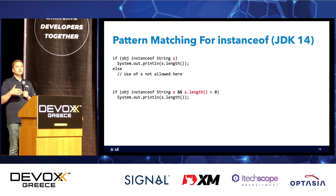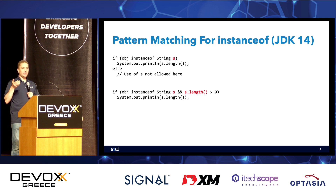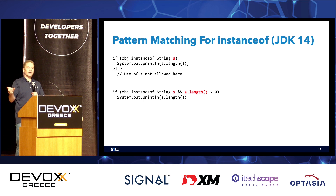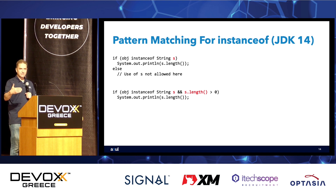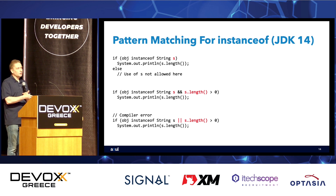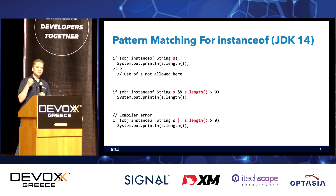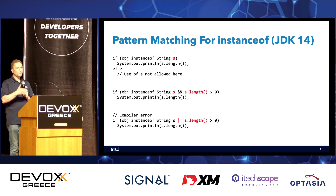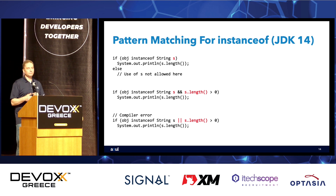We can take that further and add another test: `if (obj instanceof String s && s.length() > 0)`. This works because the `&&` operator always evaluates the left-hand side first and only evaluates the right-hand side if the left is true. So if the left side is true, we know we have a String, `s` is in scope, and testing `s.length()` is valid. Using the `||` operator would not work, because if the left evaluates to false we don't have a String, so `s` would not be in scope — resulting in a compiler error.